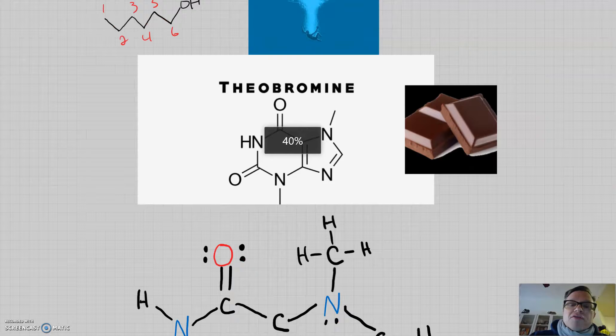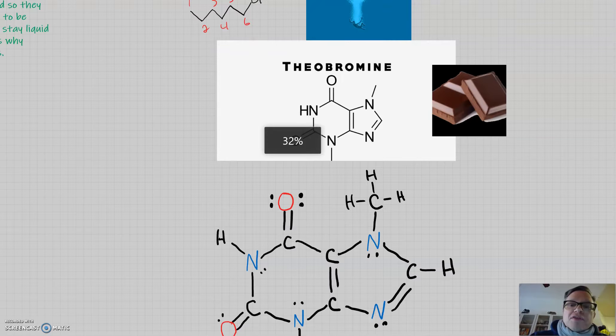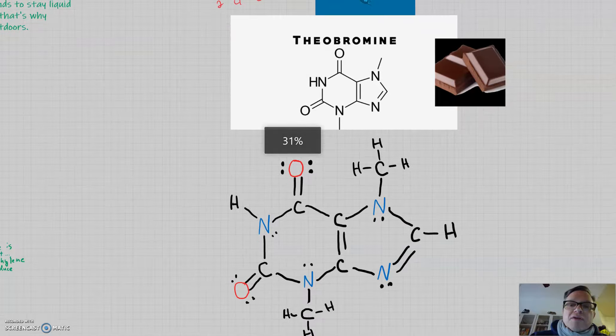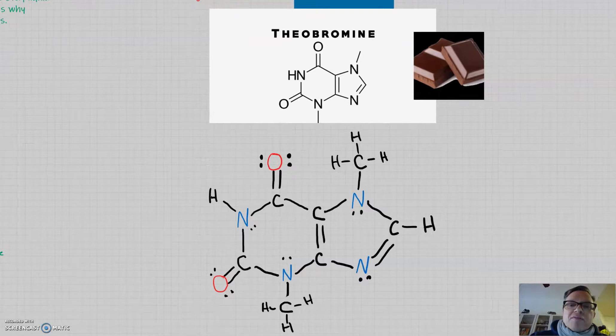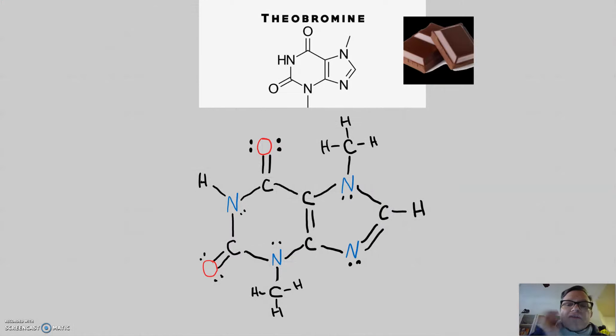Alright. So, here's what the Lewis structure of theobromine would look like. Theobromine, by the way, is one of my favorite molecules because it's the active ingredient in chocolate. So, let's deconstruct what's going on here.